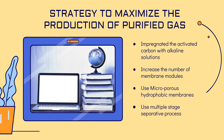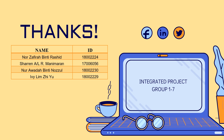The strategy to maximize the production of purified gas includes: first, infiltrating the activated carbon with alkaline solution; second, increasing the number of membrane modules; third, using microporous hydrophobic membranes; and lastly, using a multiple-stage separation process. These strategies will help increase the production of purified gas. That's all from us — thank you so much for listening.